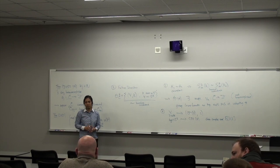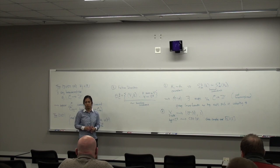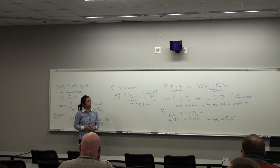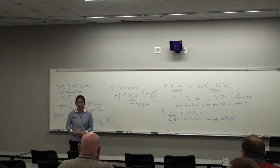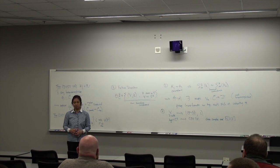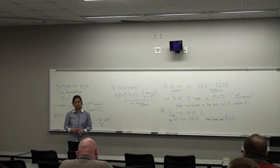A question from the audience: instead of looking at Z homology cobordism between Z homology spheres, could you look at Q homology cobordism between Z homology spheres, and is there some hope of getting a Z^∞ summand for that? The speaker responded: that's a great question — I'd have to think about it. Let's thank the speaker.